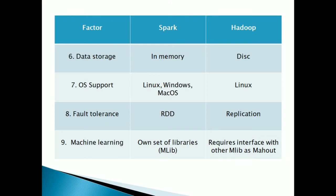Next are machine learning libraries. In Spark, there is its own set of machine learning libraries — no need to work with another machine learning tool to perform analytics. But in Hadoop, if you want to use machine learning features or libraries, it requires an interface with other machine learning tools; one example is Apache Mahout, which provides machine learning algorithms for Hadoop. So Spark has its own built-in library, which is one of the key differences between Spark and Hadoop.